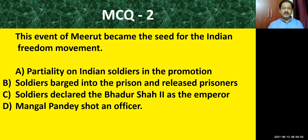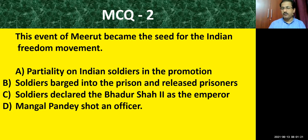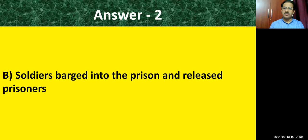MCQ question number two: this event of Meerut became the seed for the Indian freedom struggle. The four options are: partiality to Indian soldiers in promotion; soldiers barged into the prison and released prisoners; soldiers declared Bahadur Shah Second as the emperor; Mangal Pandey shot an officer. Those who have read the textbook will definitely get it right. The correct answer is: soldiers barged into the prison and released prisoners, which became the seed for the revolt.